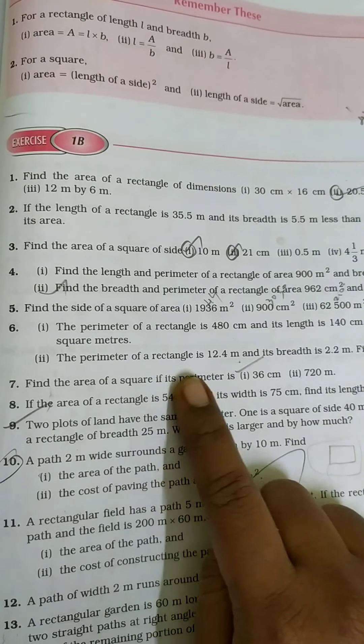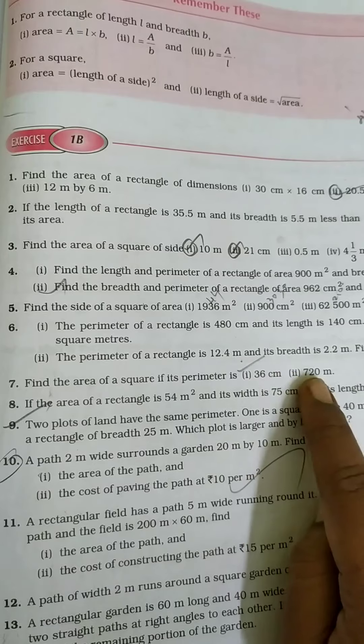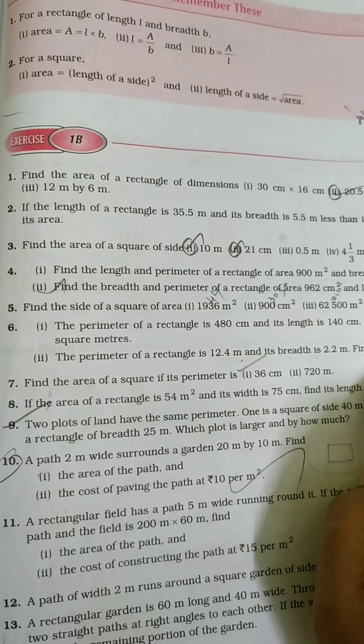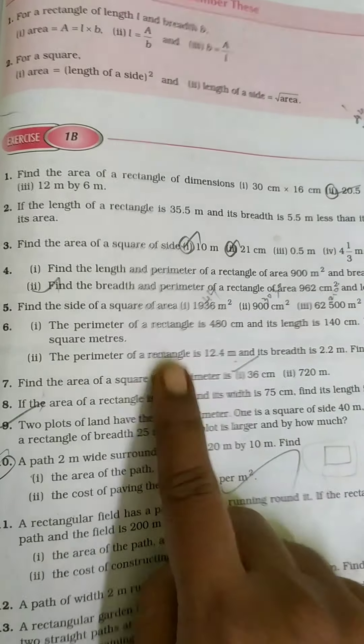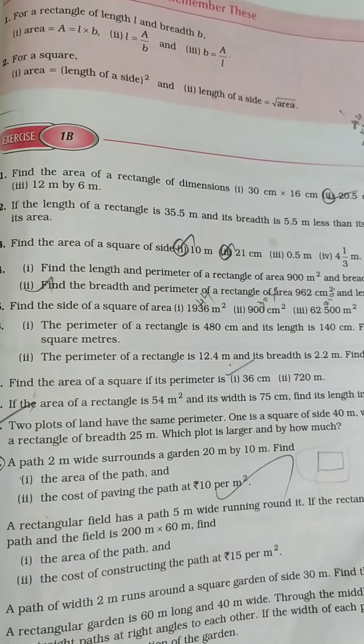The perimeter of a rectangle is 12.4 meter. Its breadth is 2.2 meter. Find its area. So they have given perimeter and its breadth. They are asking us to find area.